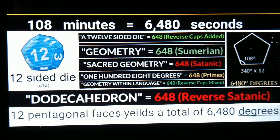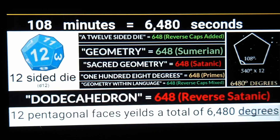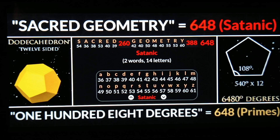It's worth repeating that gematria — letters equal numbers — gematria is geometry within language. It just so happens that using all capital letters with the reverse caps cipher, 'geometry within language' equals 648. And 'sacred geometry' with the satanic cipher — you can see the cipher breakdown in the middle of the screen — also equals 648.